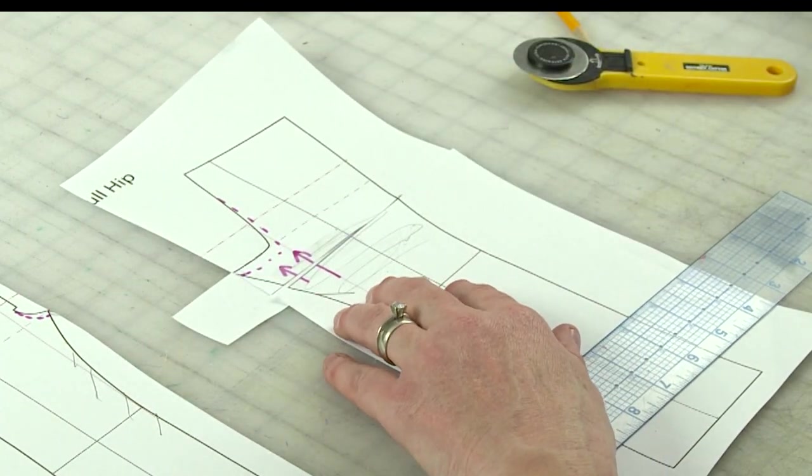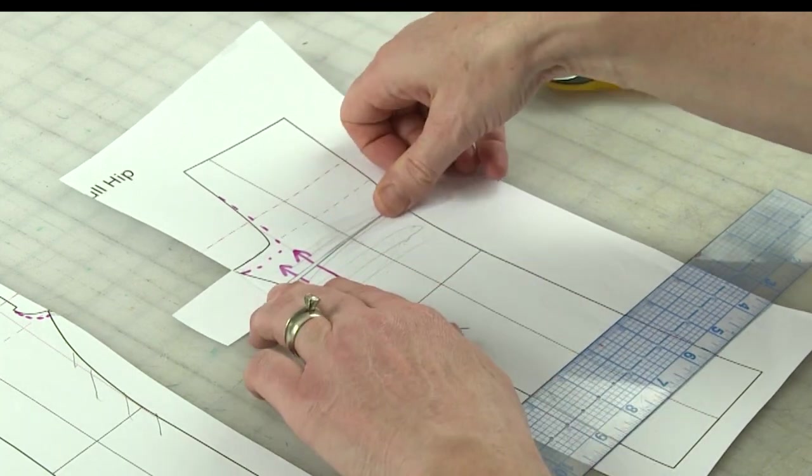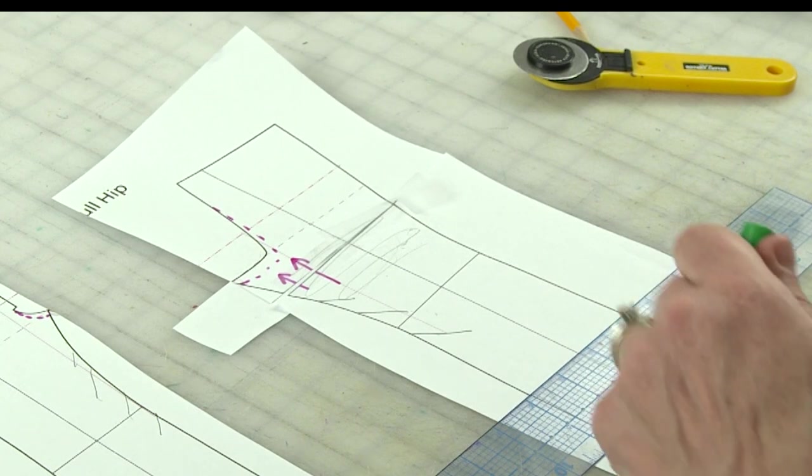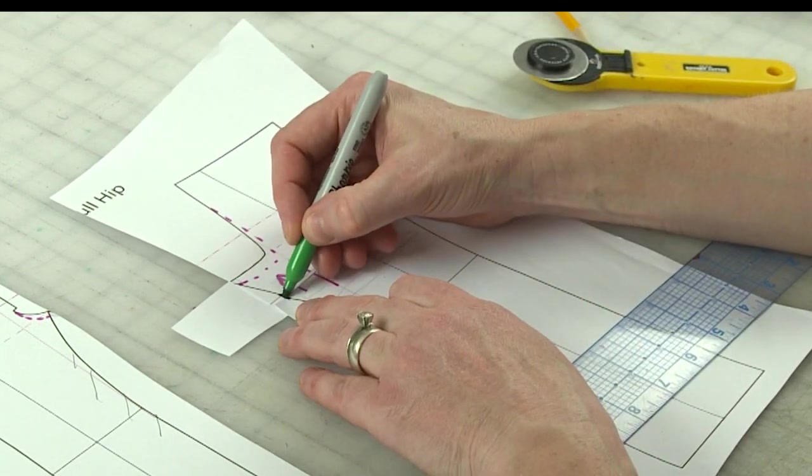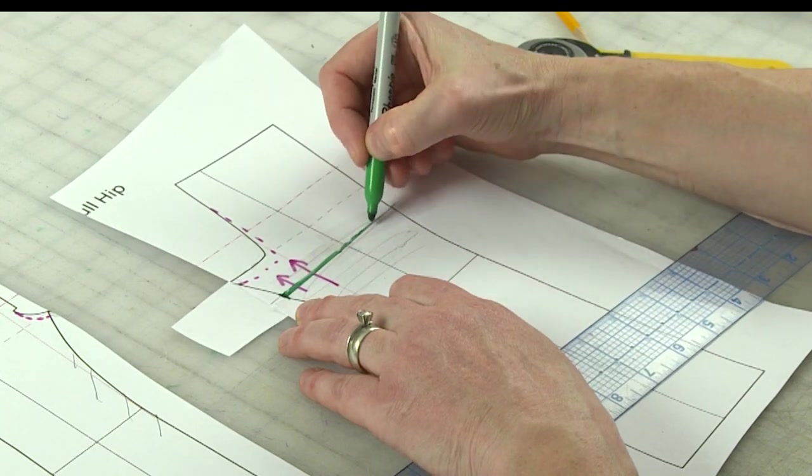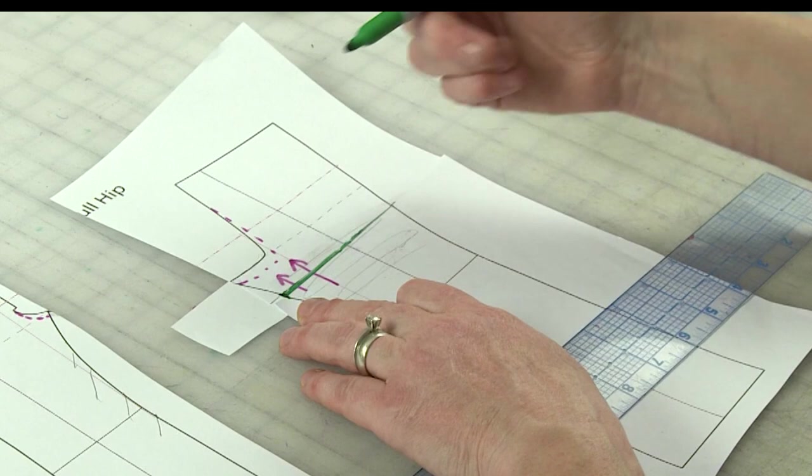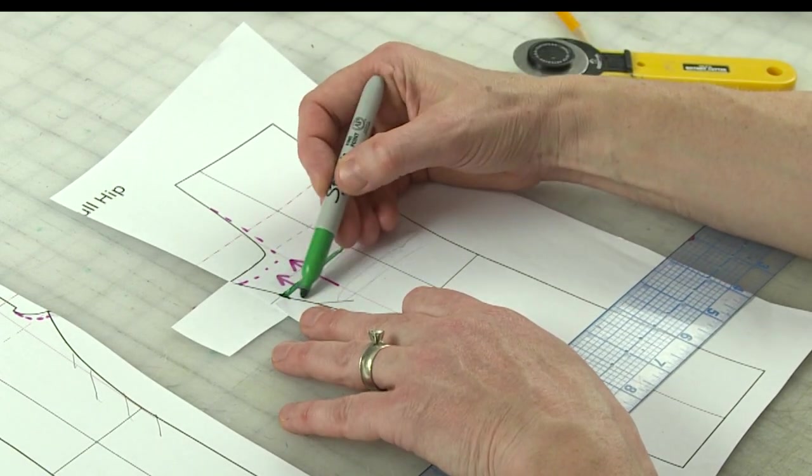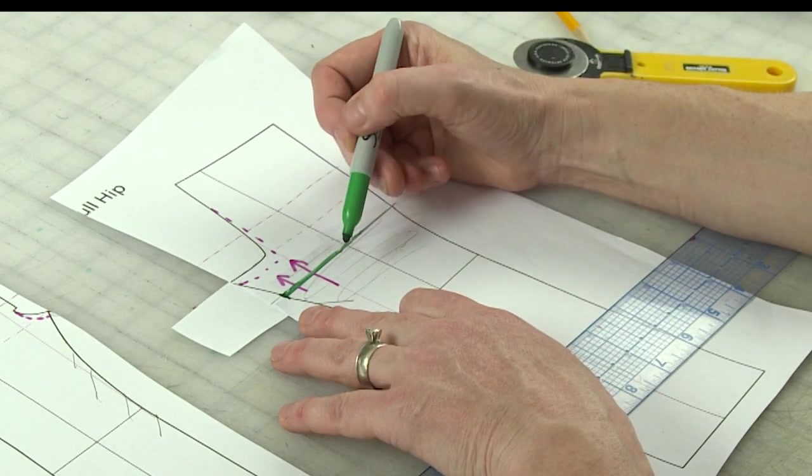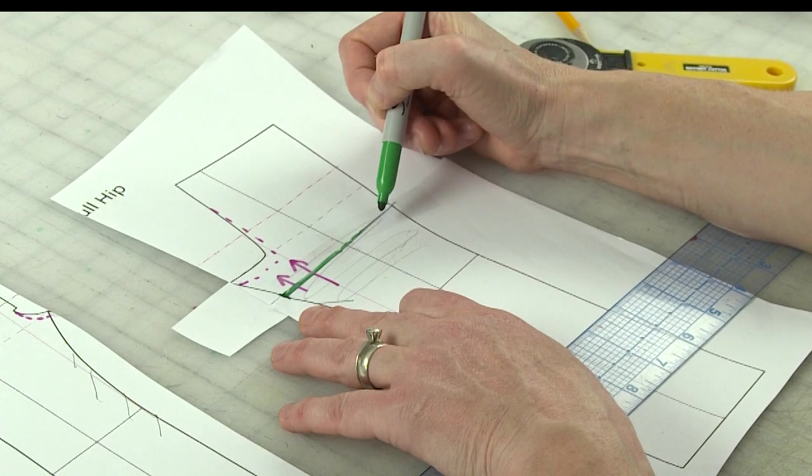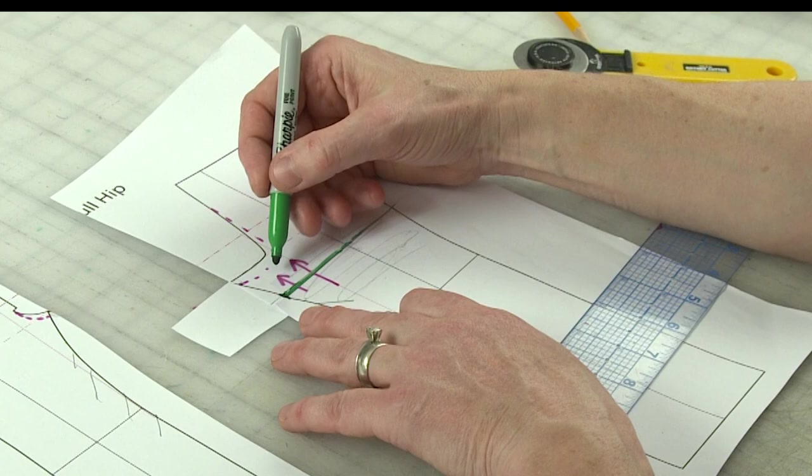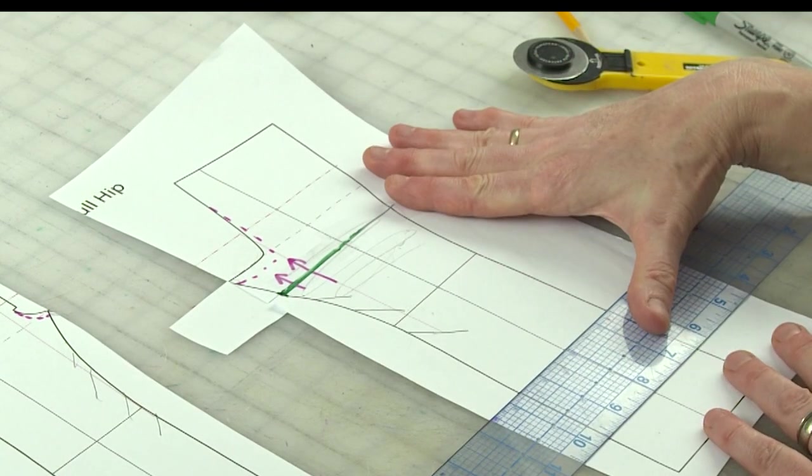So essentially you create a pivot here, you can spread the inseam to put back length on your inseam. So what you would do is you would just take some paper and you would just spread it and then tape it in place. Now you may say to yourself, well I just undid the scooping adjustment. But if we look at it really carefully, we are adding length here along the inseam. By the time you get over here, almost nothing is added. Most of what you're adding is right along this inseam.